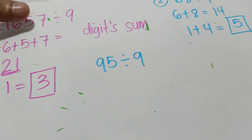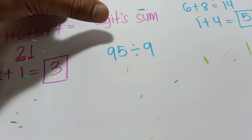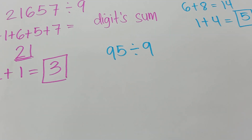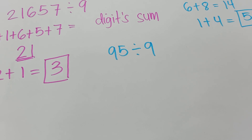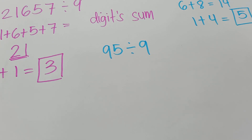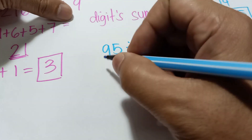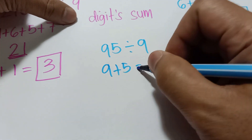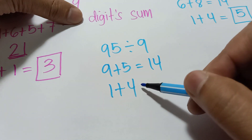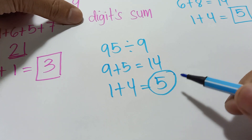Let's try this one mentally: 95 divided by 9. Can you get the digit sum? Yes — 9 plus 5 is 14. As I said, keep adding until you get a single digit: 1 plus 4 is 5. Therefore, the remainder is 5.